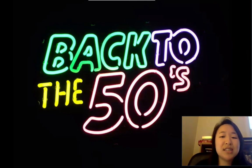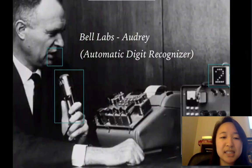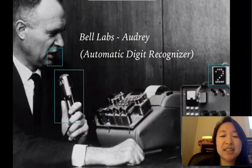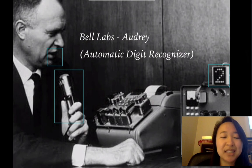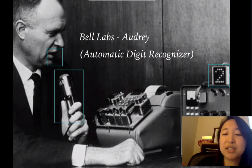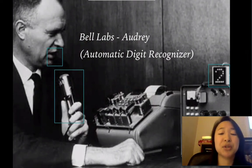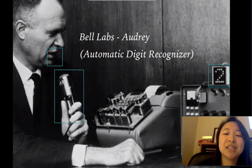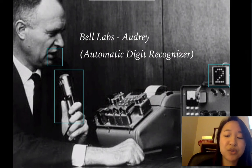Our story starts in the 50s, specifically 1952. At Bell Labs, they pioneered speech recognition in a software called Audrey, short for Automatic Digit Recognizer. It follows the same three steps: the human outputs speech, the machine recognizes it through the microphone and software, and transcribes it — recognizing 10 digits, zero through nine.